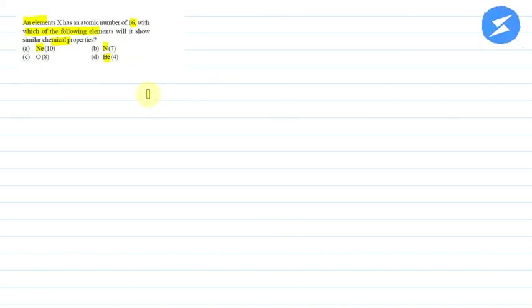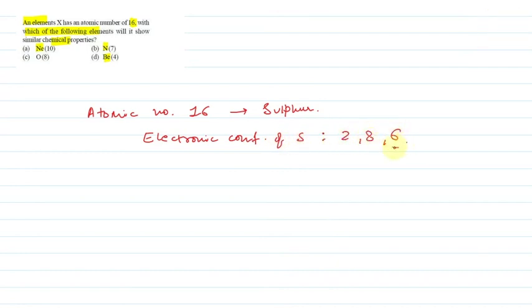So I am going to tell you that element X with atomic number 16 will show which chemical properties. First of all, atomic number 16 is sulfur. The electronic configuration of sulfur is 2,8,6. So the outer shell has my valence electrons.